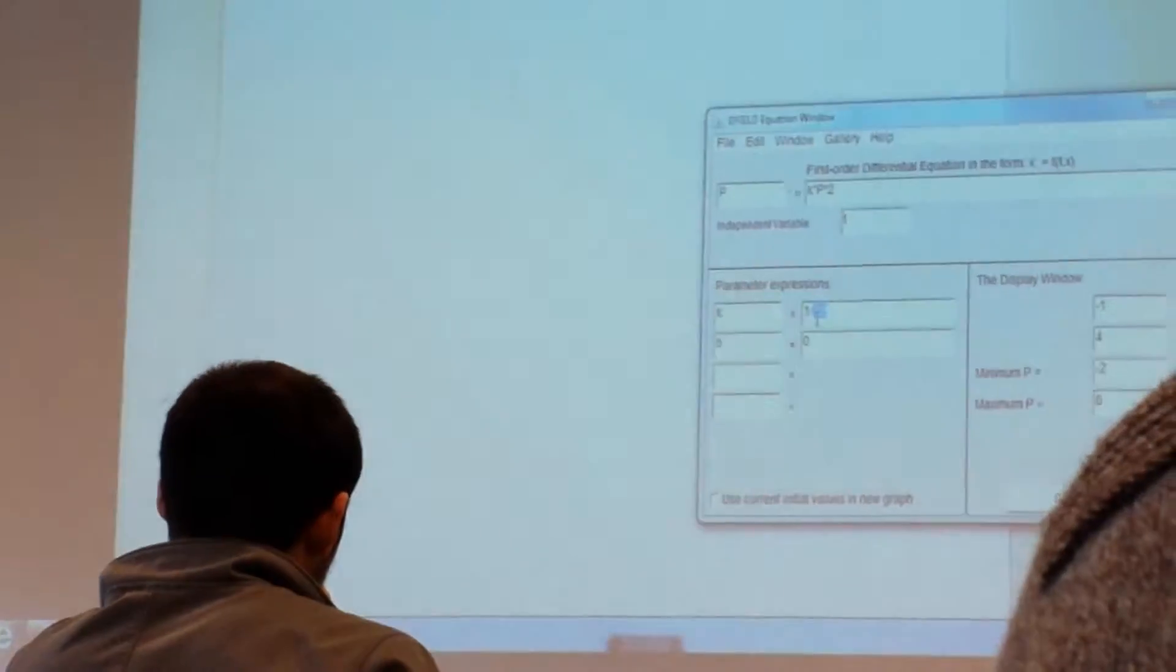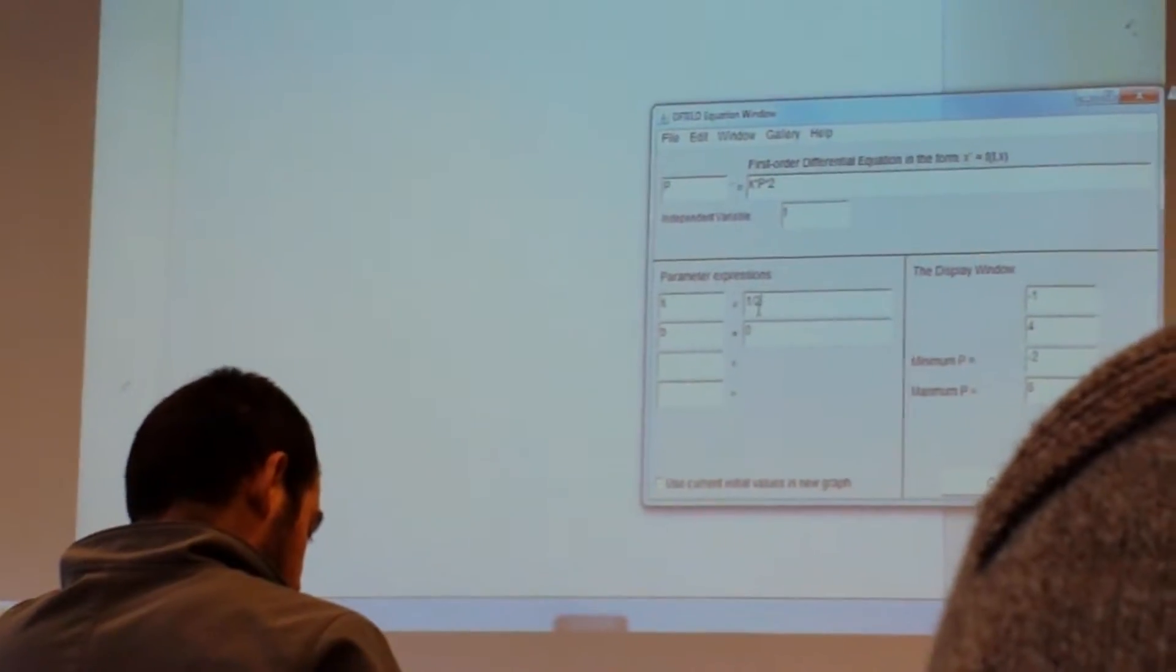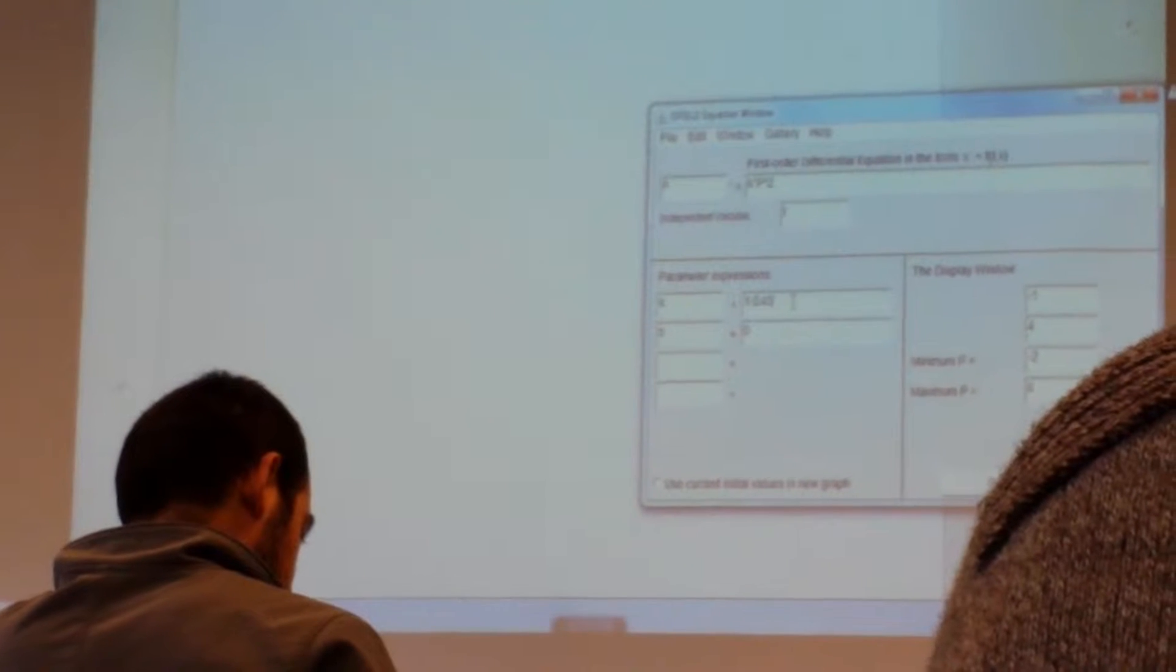Oh, 1 over 240. Okay, there were two different constants, right? 1 over 240. Is that right? Yeah.